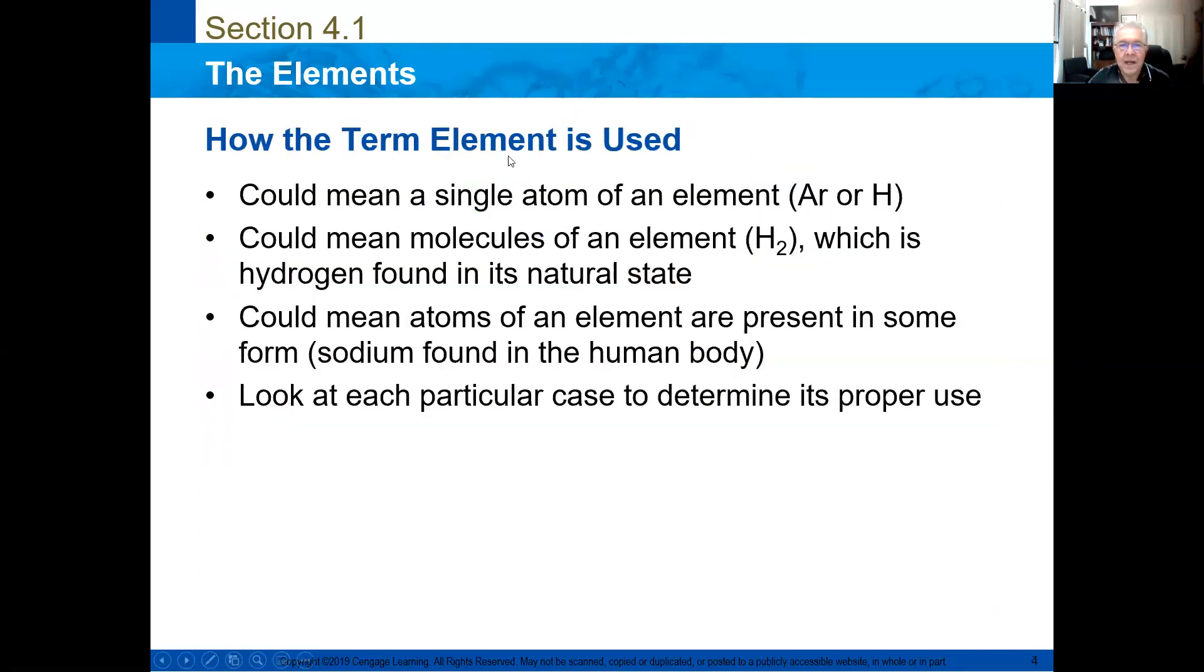What is exactly an element? An element is a single atom, and can be represented by the letters. For example, here we have argon and hydrogen. If they join together, the atoms can join together and make molecules. For example, two atoms of hydrogen make hydrogen molecule. That is what we found in natural state as hydrogen. But some elements are present in elemental form or in making compounds.